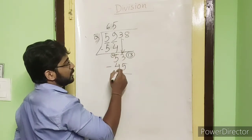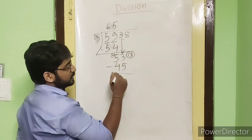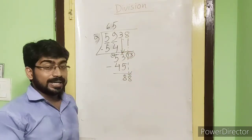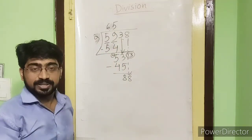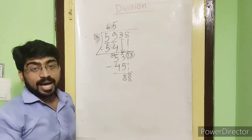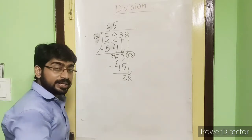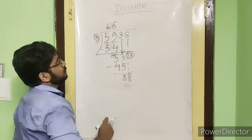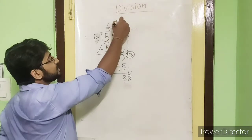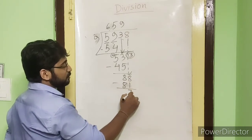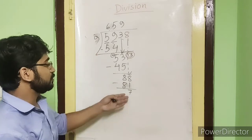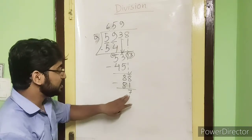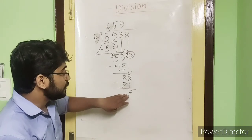We borrow 1 from 5, making it 4. 13 minus 5 = 8. So 8 comes down. Now we need to find 9 times what is close to 88: 9×9=81, 9×10=90 — 90 is too large. So we use 81: 88 minus 81 equals 7. Since 7 is not divisible by 9, the quotient is 659 and the remainder is 7.